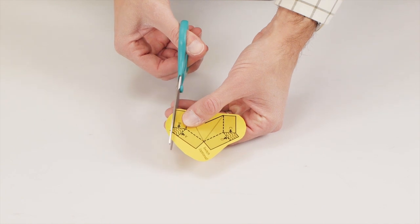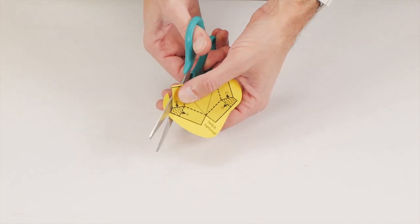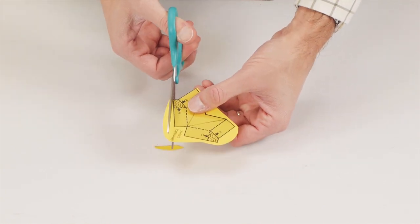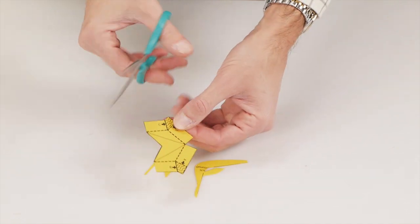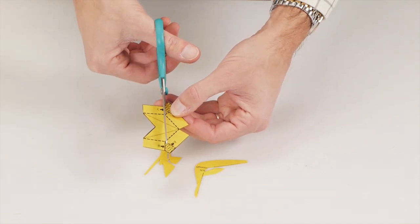First, cut along the switch's solid lines. Don't forget to cut along the small straight lines that cut into the switch.